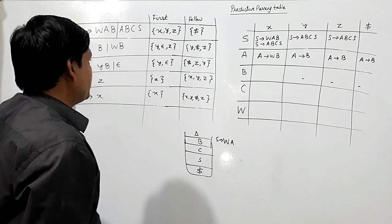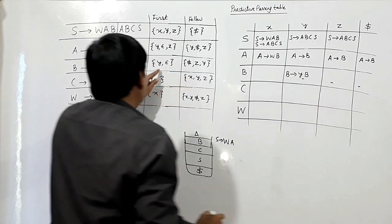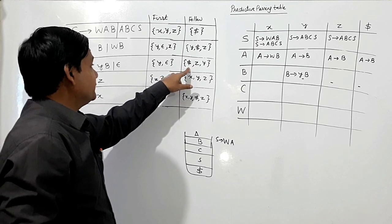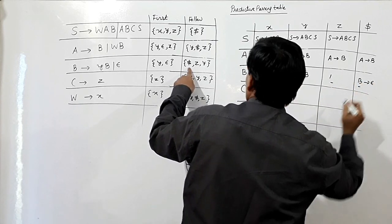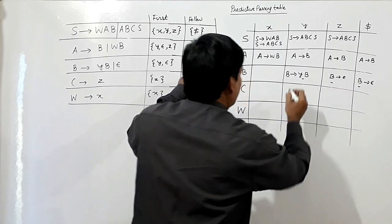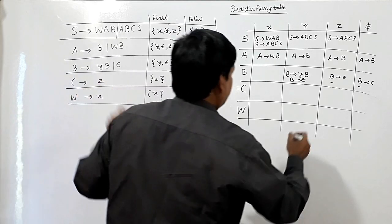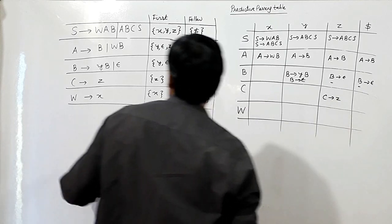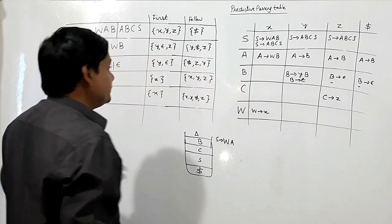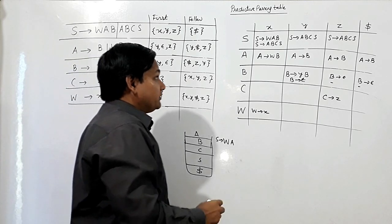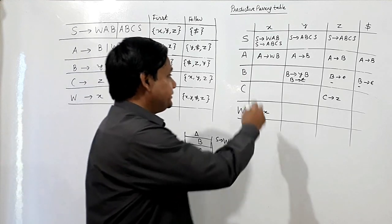For B at column Y: I use B produces YB. Since Epsilon is in first of B, I write B produces Epsilon in the follow(B) columns: dollar, Z, and Y. For C at column Z: C produces Z. For W at column X: W produces X. This completes the predictive parsing table. We can see that some cells contain multiple entries, so this grammar is not LL(1).